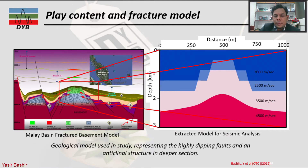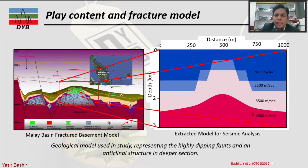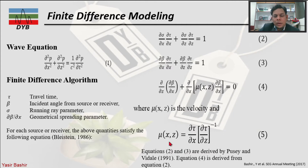I am taking a very simple model to understand seismic diffraction and how to preserve it. This model is from a Malaysian basin, where we expect a small part that is highly fractured or faulted. The model uses different velocities: 2000, 2500, 3500, and 4500 meters per second. There is an intrusion or uplifting causing structure to move upward, and a very steeply dipping fault. For generating data we use the finite difference modeling method.